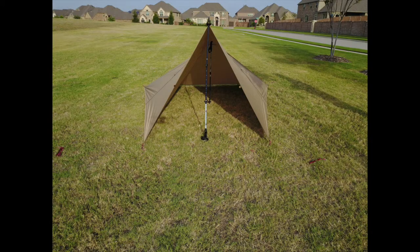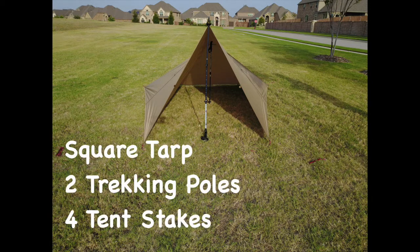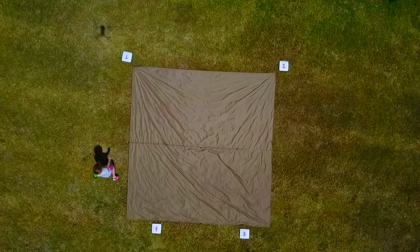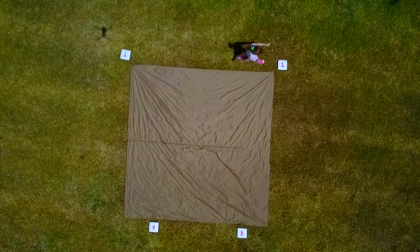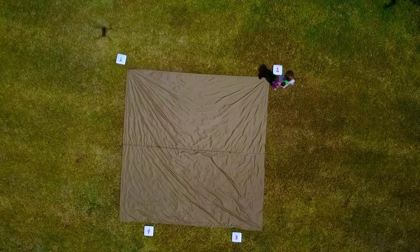For today's shelter you're going to need a square tarp, two trekking poles, and four tent sticks. First you want to put a tent stick on the back corners of your tarp. That's number one and number two in the video.